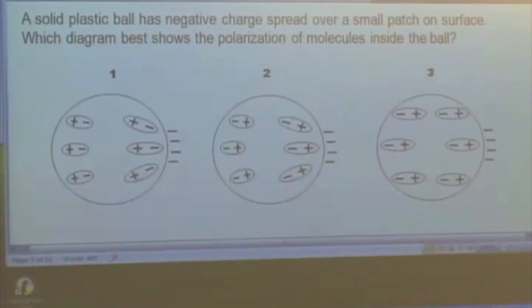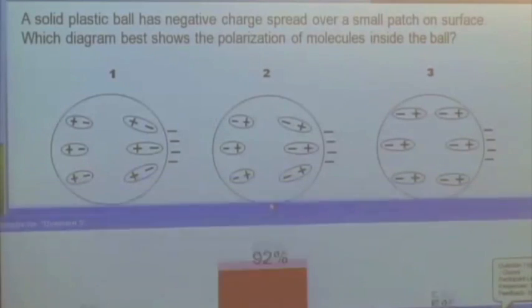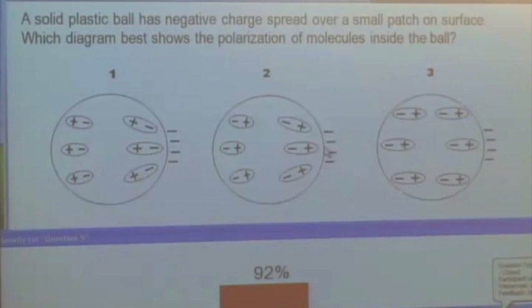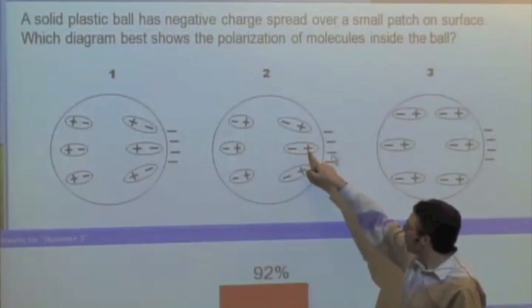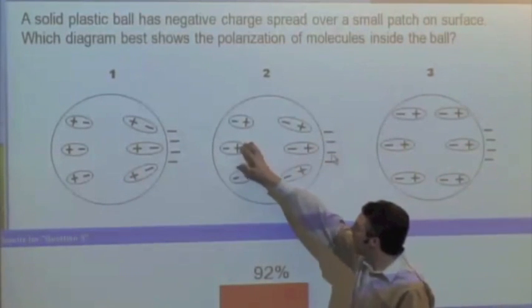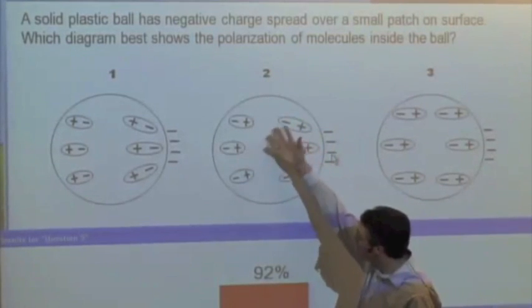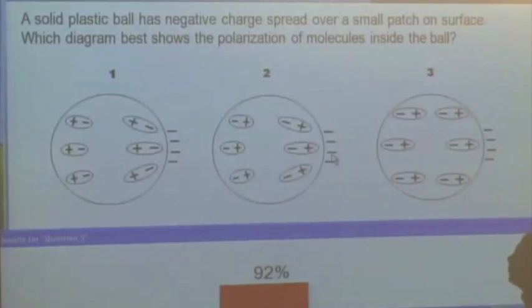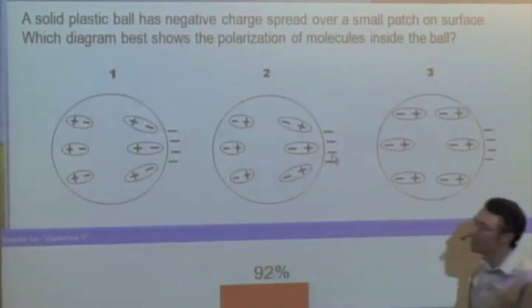Which diagram best shows the polarization of the molecules inside this solid plastic ball? It's got to be two. The induced dipoles are created due to the electric field made by the negative charge. The negative charge makes an electric field pointing towards it, so the dipoles are polarized that way — positive charge is closer to the negative charge. The size of the dipole indicates the strength; the field gets smaller the farther away you go, and the dipole moment is proportional to the electric field and also the direction — the direction in which it polarizes lines up with the electric field.